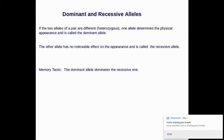Now we're going to use two new vocabulary words, dominant and recessive. If the two alleles of the pair are different, meaning heterozygous, one allele determines the physical appearance, and that's called the dominant allele. The other allele has no noticeable effect on the appearance, and that's recessive. So just to help you remember it, just remember that the dominant allele dominates the recessive one.